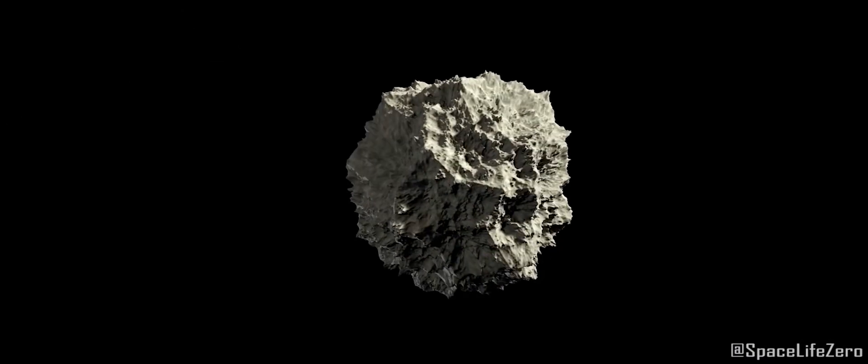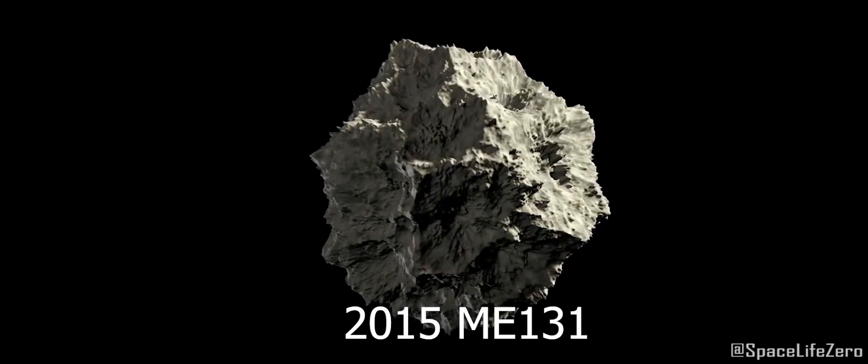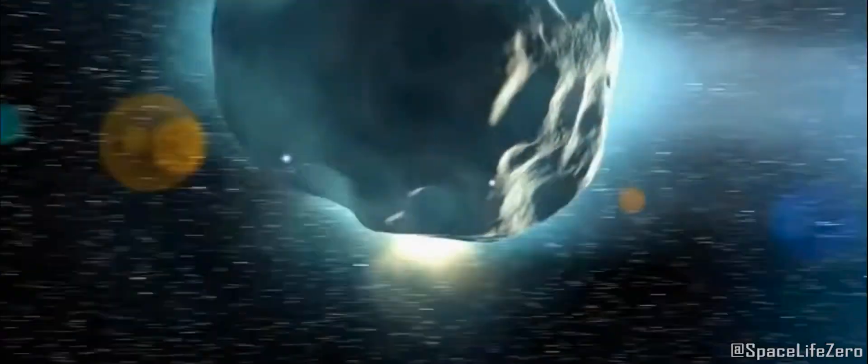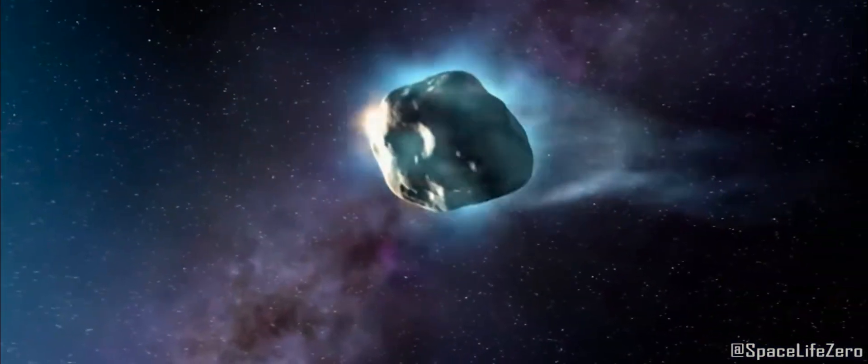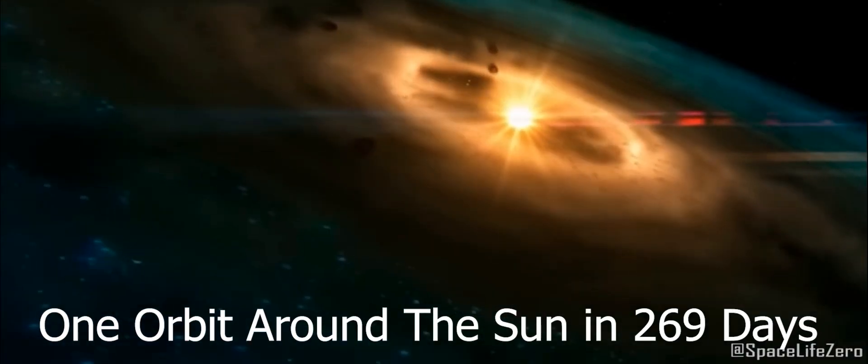The asteroid has been designated Asteroid 2015 ME-131, and it belongs to the Athen Group. It makes one orbit around the Sun in 269 days.